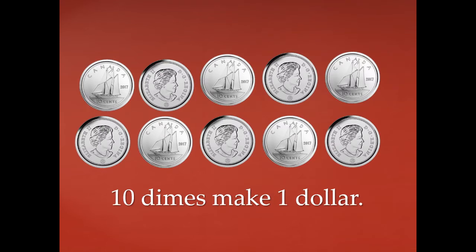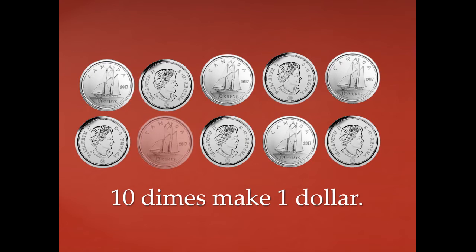It takes 10 dimes to make one dollar. We're going to count these together and we're going to count by 10: 10, 20, 30, 40, 50, 60, 70, 80, 90, 100. One hundred cents are in one dollar, so it takes 10 dimes to make one dollar.